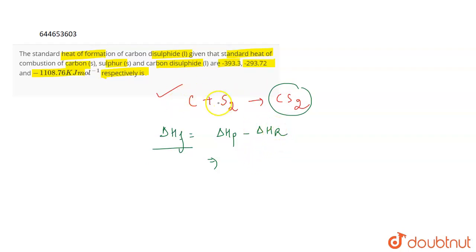In the product, what do you have? CS2. And what is the energy corresponding to CS2? Minus 1108.76. Minus the reactants are C and S2. Energy corresponding to C, which is carbon, is minus 393.5. Plus the reactant S2, and the energy corresponding to it is minus 293.72.